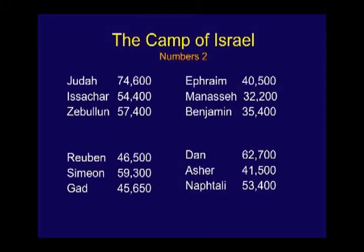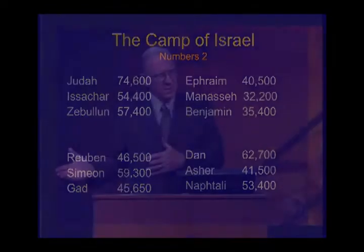If you wade through Numbers 2, you'll discover they number each of the tribes. Judah is 74,600; Issachar 54,400; etc. They're all on the screen here. These numbers are the men older than 20 able to go to war, so it does not include the children or women. It does include the aged.